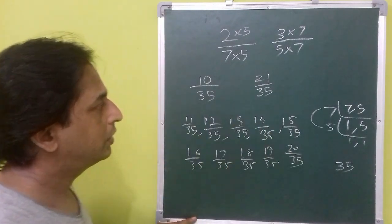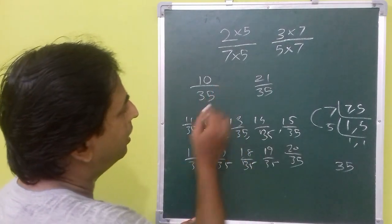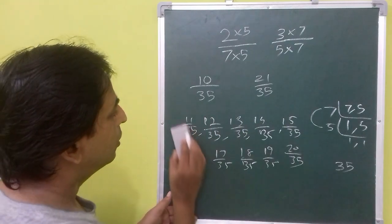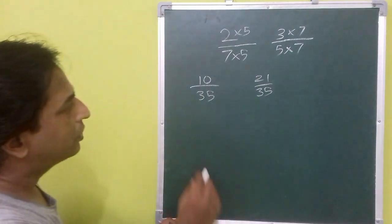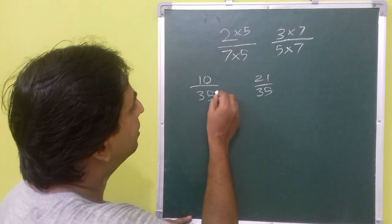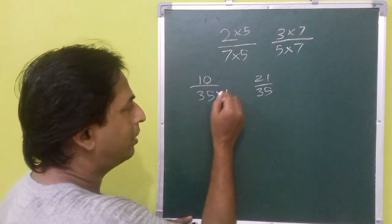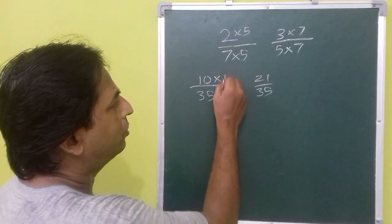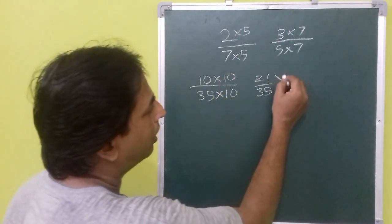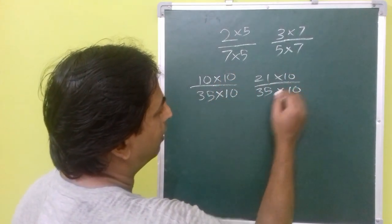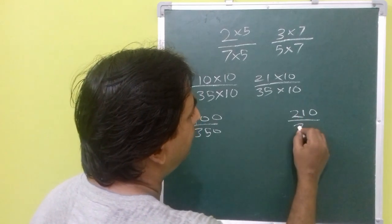If your question was to find 20 rational numbers between these two, it is not possible with denominator 35 since there are only ten integers between 10 and 21. To find 20 rational numbers, multiply both fractions' numerators and denominators by ten, giving 100/350 and 210/350, between which you can easily find 20 rational numbers.